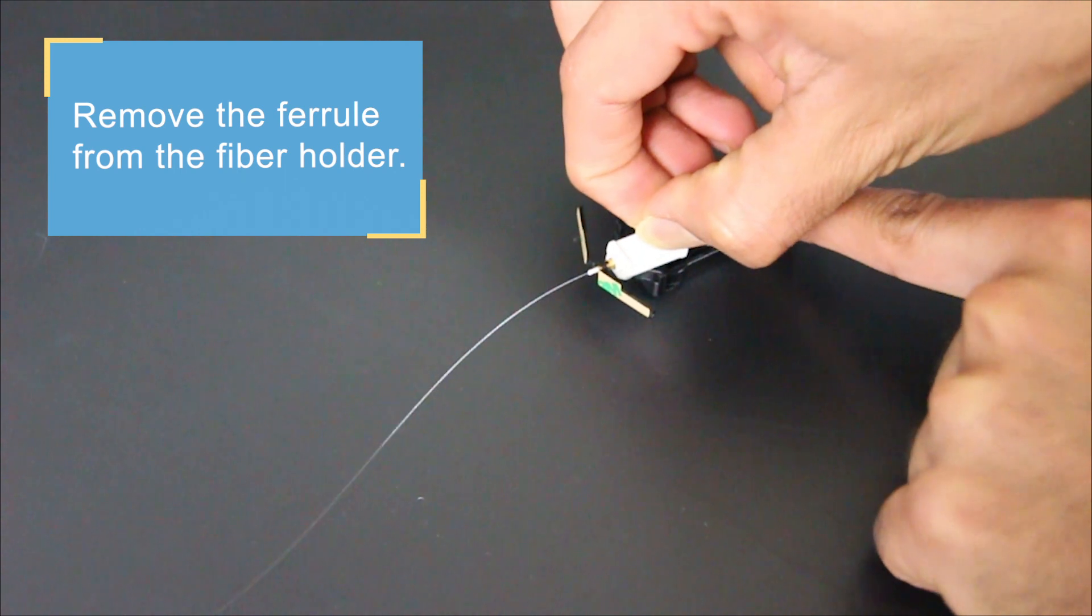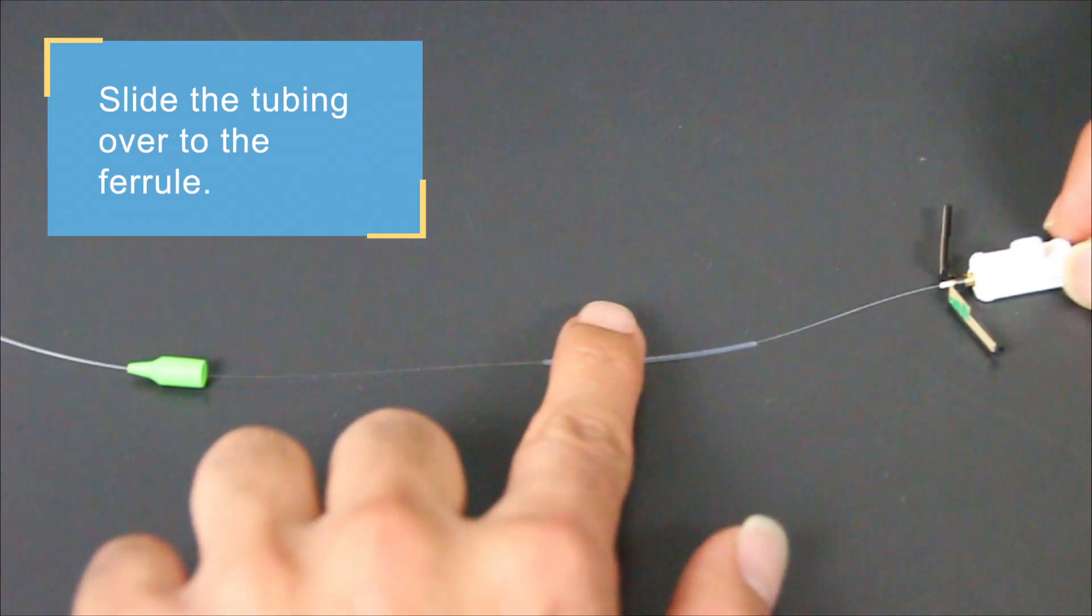Next, remove the ferrule from the fiber holder. Slide the tubing over to the ferrule.